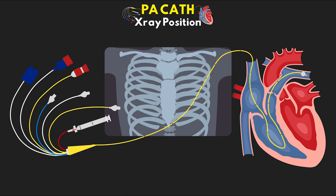In the last lesson we looked at a couple x-rays pretty quickly that showed us the location of our PA catheter. As I mentioned in that lesson, I wanted to put together a more in-depth lesson on that topic, so I did want to go over more information about what you're looking at on the x-ray, and to show some more examples along with some abnormalities that you might come across.